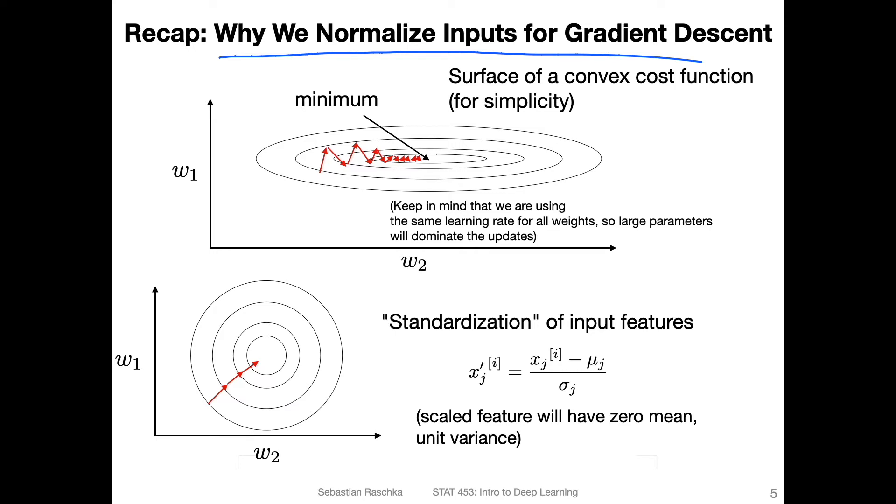We already talked about this a little bit when we talked about gradient descent and stochastic gradient descent, I think it was in lecture five. So just to recap, why do we normalize inputs? That's really to find a good learning rate and to have more stable training.